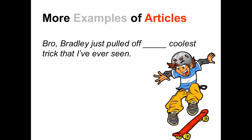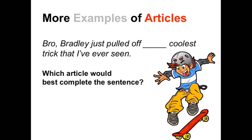Here are some more examples of sentences using articles. 'Bro, Brodley just pulled off the coolest trick that I've ever seen.' Which article would best complete this sentence? We should use the definite article 'the' because we're referring to a specific trick — in this case, the coolest trick ever.